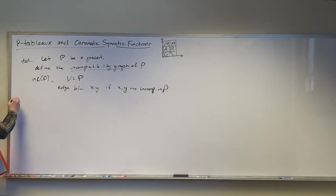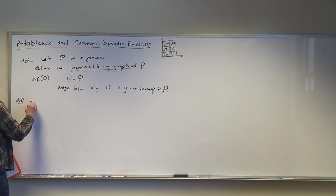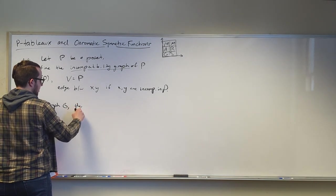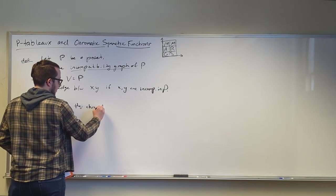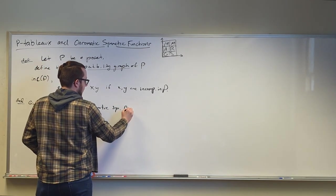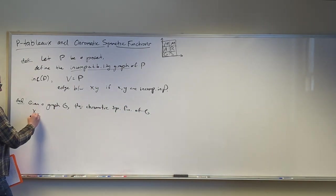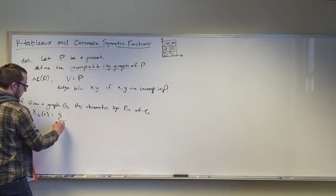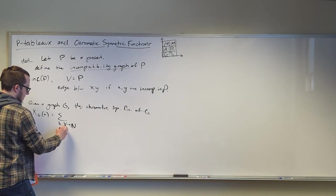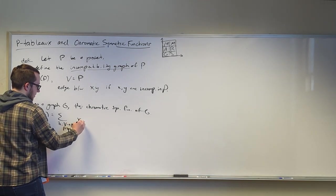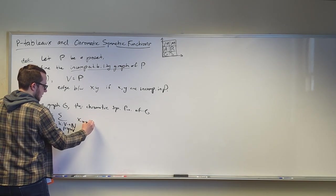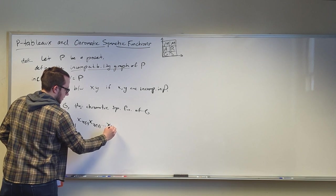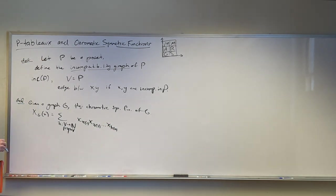So if x and y are incomparable, we get an edge in the graph, and we'll have a couple of graphs later down the line to see some examples of that. First, the chromatic symmetric function part of this, given a graph G, the chromatic symmetric function of G, which we'll write x sub G is the sum overall proper colorings of these monomials, where you just keep track of how many times you use each color.